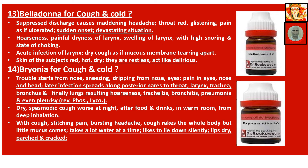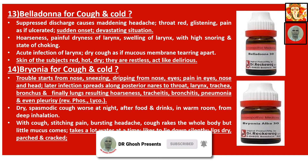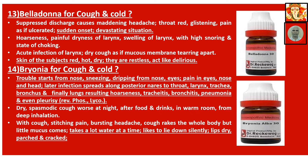Bryonia for cough and cold: trouble starts from the nose — sneezing, dripping from nose and eyes, pain in eyes, nose and head. Later the infection spreads along the posterior nares to the throat, larynx, trachea, bronchus, and finally the lungs — resulting in hoarseness, bronchitis, pneumonia, and even pleurisy. The reverse is true for Phosphorus or Lycopodium, where infections start from the lung and then come upward. In Bryonia, infections start from the nose and go downward towards the lung. Dry spasmodic cough, worse at night, after food and drink, in a warm room, from deep inhalation. With cough: stitching pain, bursting headache. Cough wracks the whole body but little mucus comes. Takes a lot of water at a time. Likes to lie down silently. Lips dry, parched and cracked. The underlined symptoms are the general symptoms of Bryonia and are very important.